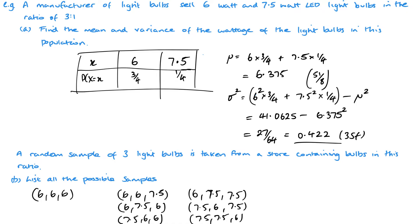We could also take one 6-watt and two 7.5-watt bulbs, again with three different combinations. Finally, there could be three 7.5-watt bulbs. So in total there are eight different possible samples, and these will help us work out the probabilities.